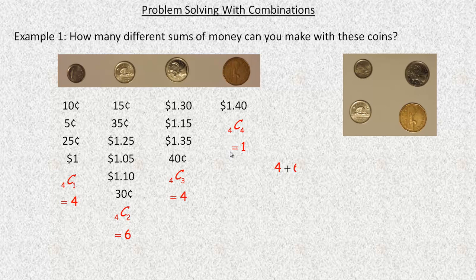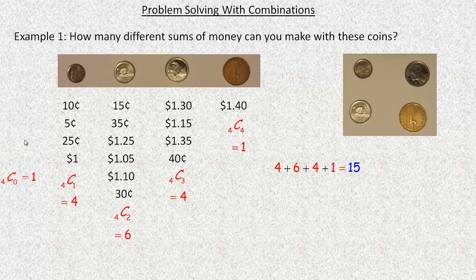Adding 4 + 6 + 4 + 1, there are 15 different sums. One other thing to note: we didn't pick none of the objects. That would be 4 choose 0, which equals 1 — there's one way to select nothing. Most people wouldn't consider picking nothing to be a sum of money, but it is one way to pick a certain number of coins. There's one way to pick nothing.